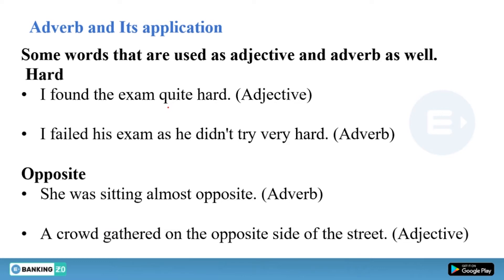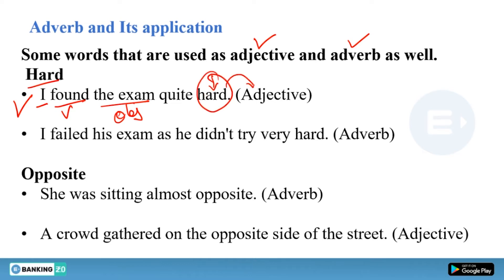Some words can be used as both adjective and adverb, like 'hard' and 'opposite.' In 'I found the exam quite hard,' 'hard' is an object complement functioning as an adjective, and 'quite' is an adverb. In 'He failed his exam as he didn't try very hard,' 'hard' qualifies the verb 'didn't try' and is therefore an adverb. 'Very' is also an adverb qualifying 'hard.'